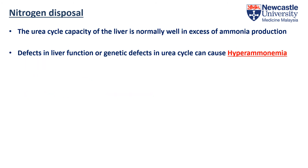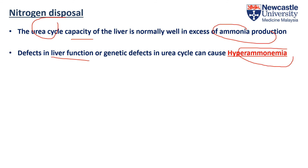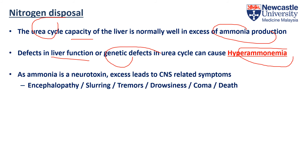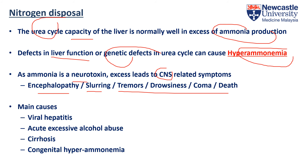Normally the liver has high capacity in the urea cycle, well surpassing ammonia production. But sometimes one can get hyperammonemia due to liver defects or genetic mutation. Since ammonia is a neurotoxin, it can be dangerous to the central nervous system, leading to encephalopathy and slurring of speech. Main causes include viral hepatitis (A, B, C), alcoholic liver disease, cirrhosis, or genetic conditions.